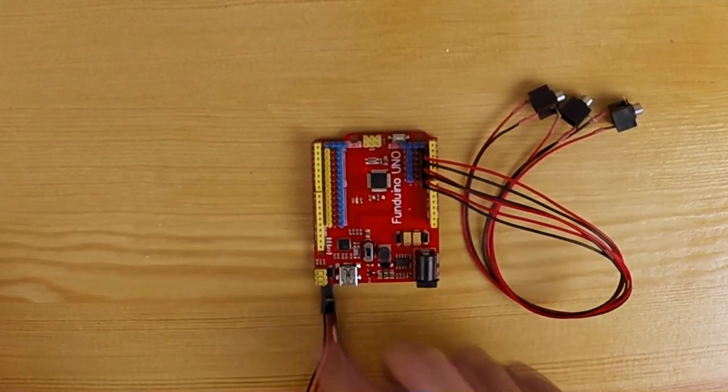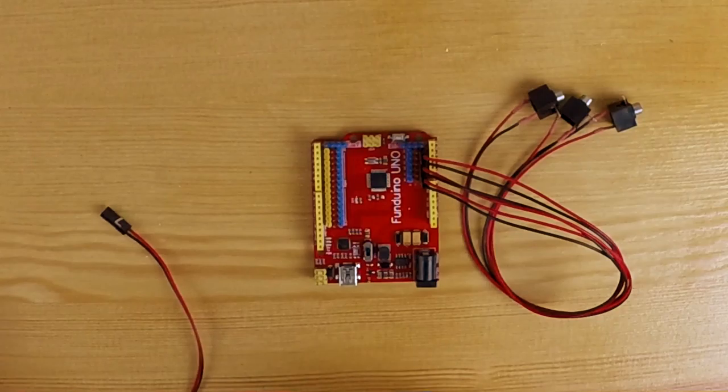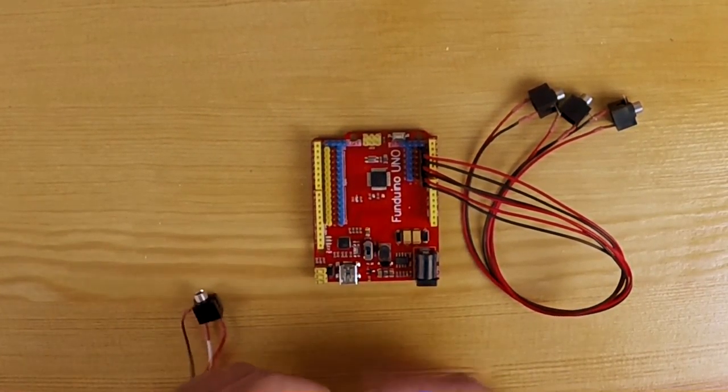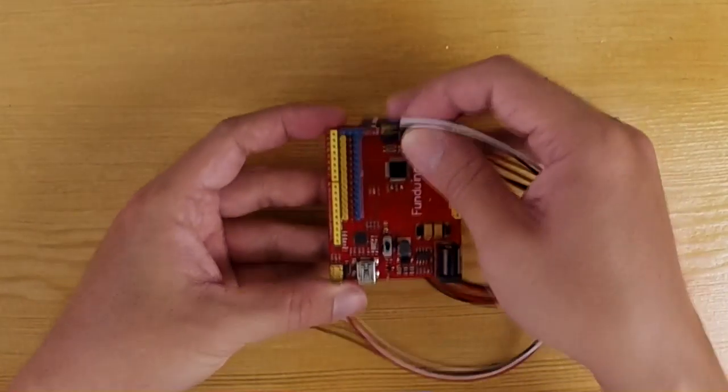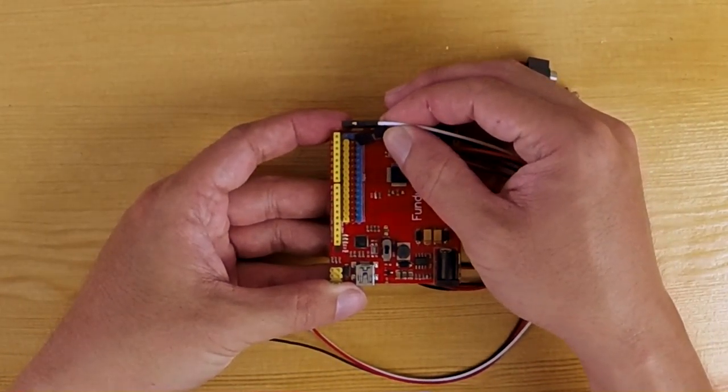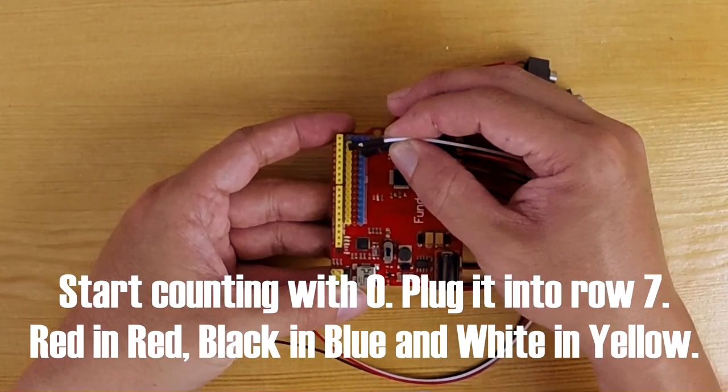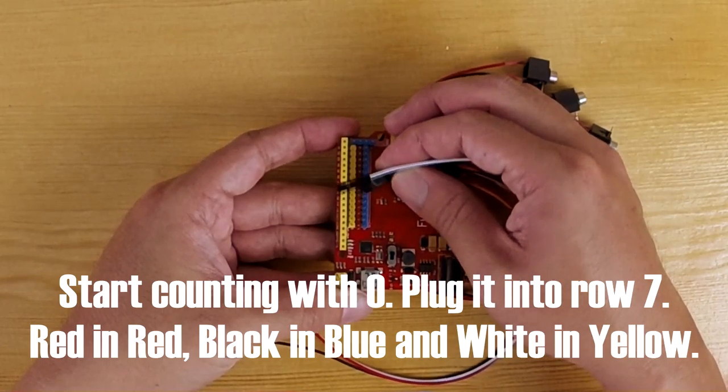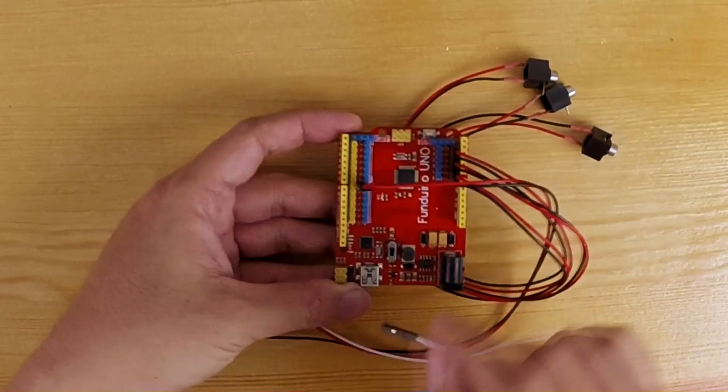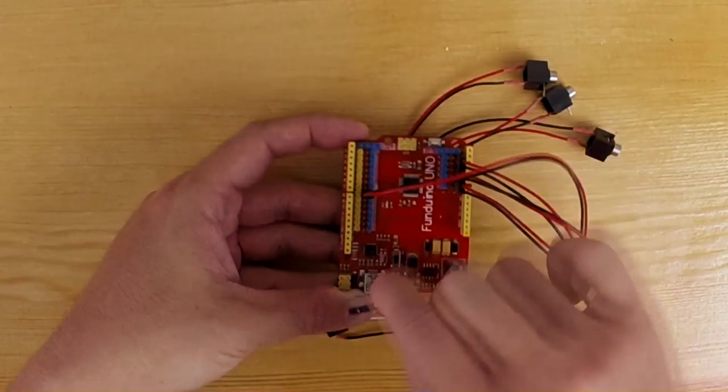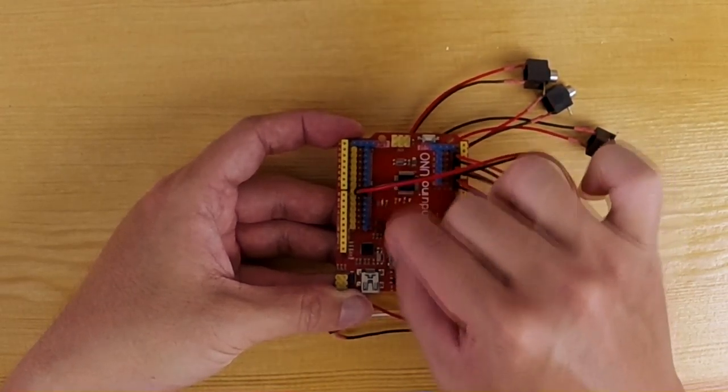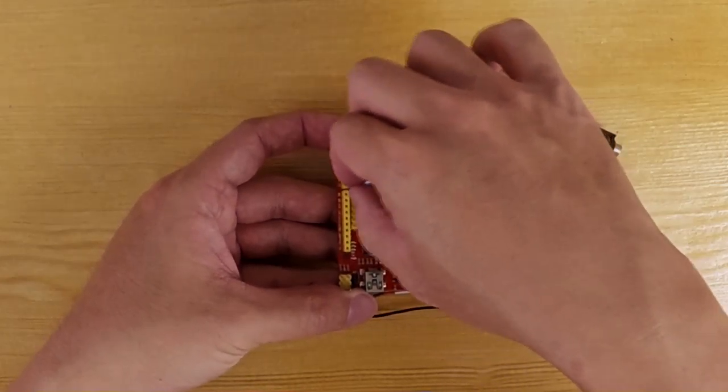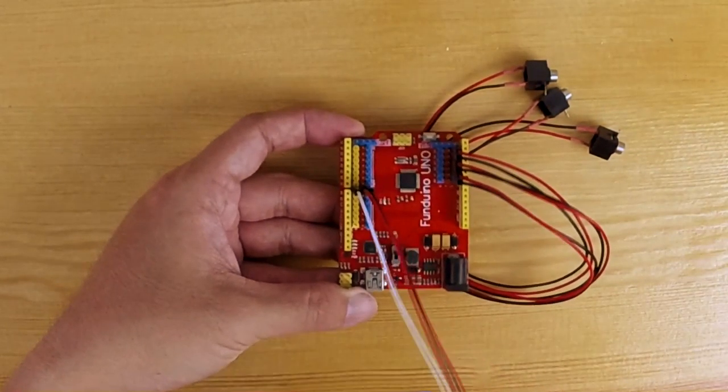For this stereo connector number 4. It says over there look for number 7. So number 7 works like this. We start with 0. 0, 1, 2, 3, 4, 5, 6, 7. And then plug them in. So the way to connect this is that the red wire goes into the red rail. The black goes into the blue rail. And the white wire goes into the yellow rail. All on the 7th row.